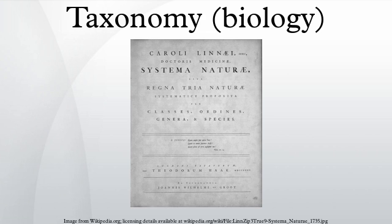The next major taxonomic works were produced by Joseph Pitton de Tournefort. His work from 1700, Institutiones Rei Herbariae, included over 9,000 species in 698 genera, and directly influenced Linnaeus as it was the text he used as a young student.